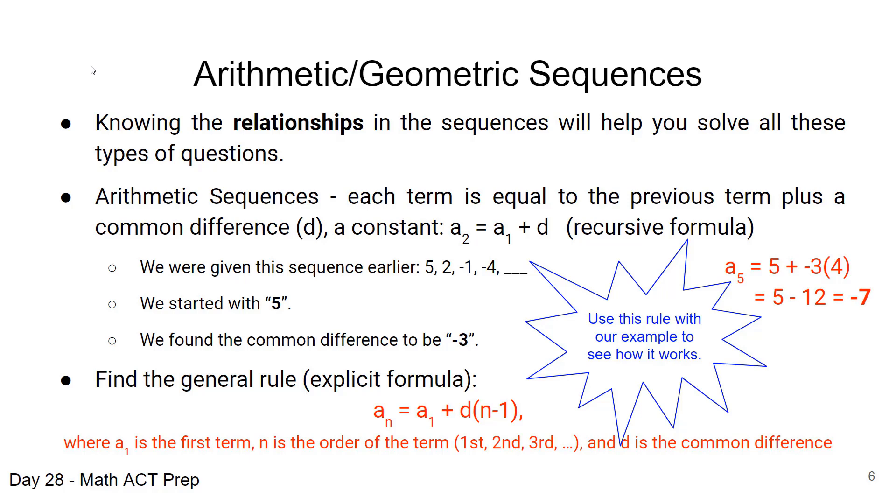And so we simplify here, we get 5 minus 12 and we get negative 7, which is the same value we got when we looked at it in a recursive way when we looked at each value leading up to the fifth value. Here all we need is that initial value, the common difference and we can find any value in the sequence.